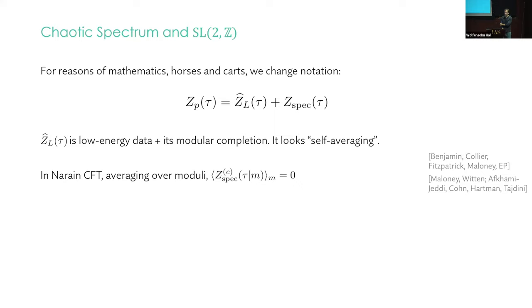Let me change notation to what we actually used in the paper. I don't want to put the cart before the horse. I'm trying to show you that this split is physically what I'm telling you it is. So in the paper, we call this first piece Z hat light. That's the modular completion of light stuff. And the second piece Z_spec for reasons that will become clear in a moment. What is this first piece? It's the low energy data plus all the heavy states that must be there due to modular invariance.